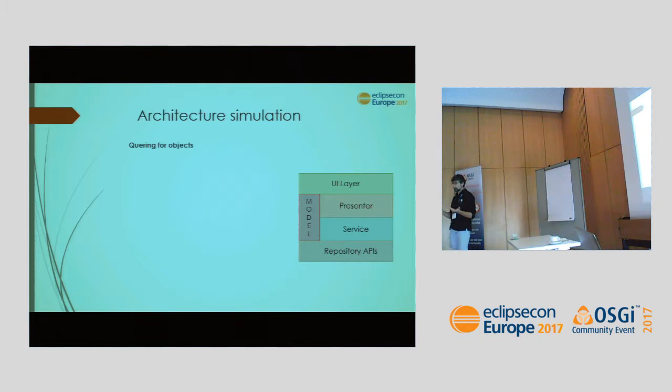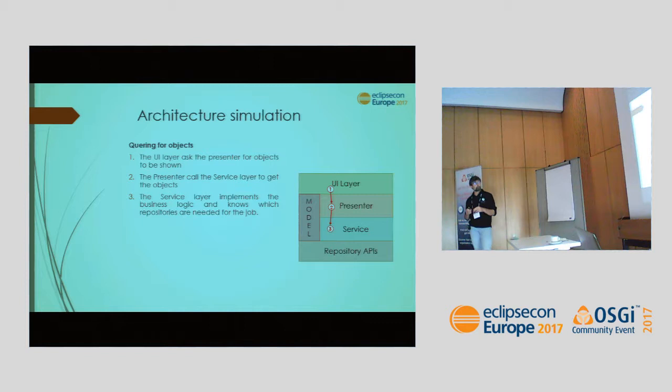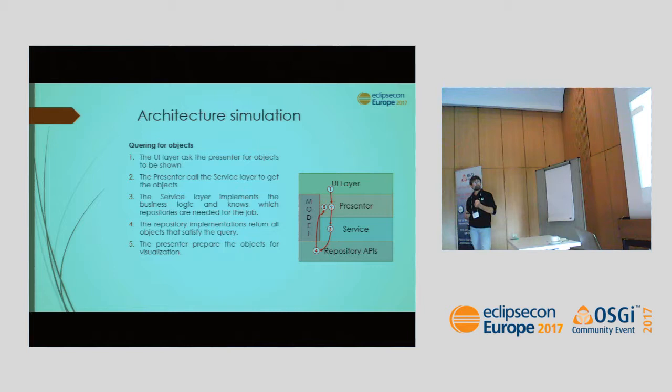Let's see what happens when the view queries for some object. The view delegates the request to the presenter; the presenter calls the underlying service. The service, which contains the business logic, knows which repository is involved, calls it, gathers the data, and returns it to the presenter. The presenter then prepares the data for the view, which performs data binding between the UI controls and the model elements.